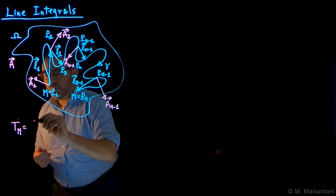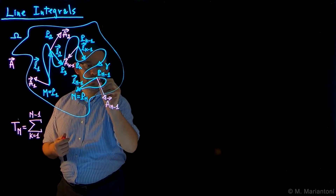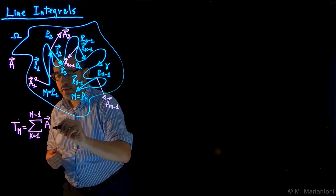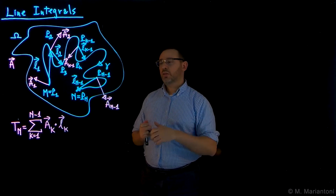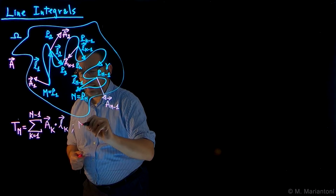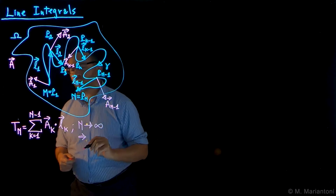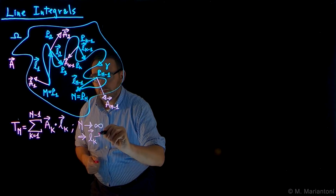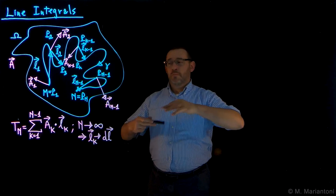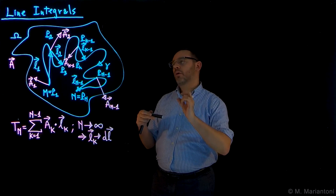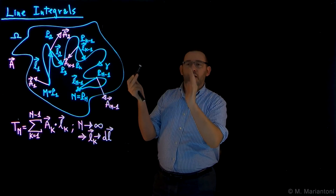T_N is given by the sum for K going from 1 to N-1, of the product between the value of the vector field A at the generic point K, dotted with L at K. Now suppose to go in the limit for capital N going to infinity. In this case, L_K which is a vector effectively becomes a vector dL, an infinitesimal quantity. So we approximate this line first with a discrete set of segments, and to approximate better we reduce the length of these segments, increasing the number of points on the line until we get the original line gamma as close as possible.